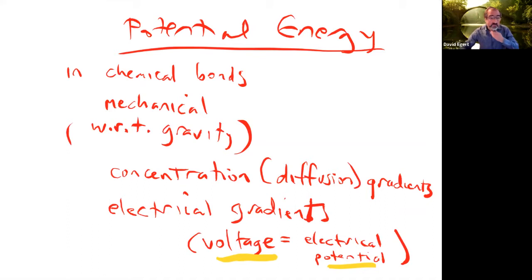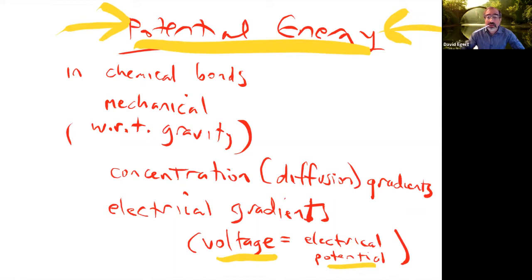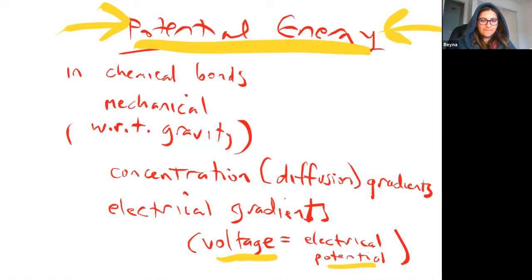Potential energy is going to be an ongoing theme till the last day of class. You really need to feel comfortable with the idea of potential energy and the ability to convert it into forms that are more useful - usually kinetic, or heat, things like that. Elastic could be considered a form of mechanical energy - like a rubber band or a spring.